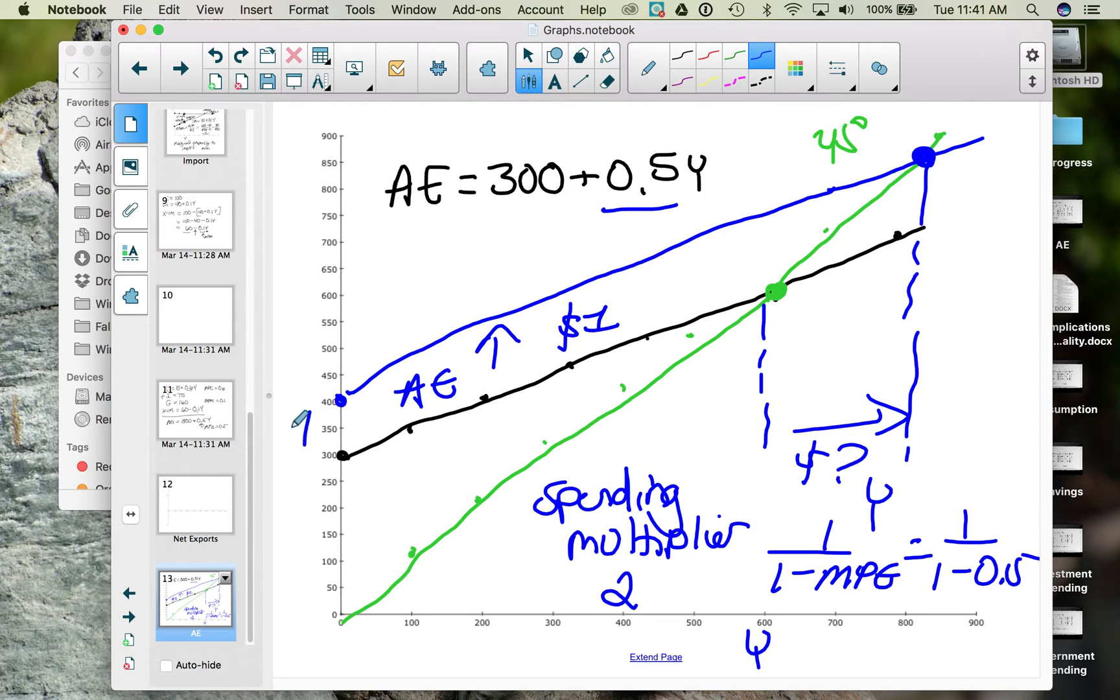Or in this case, where we increased aggregate expenditures by $100, national income increases by $200.